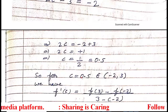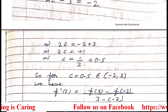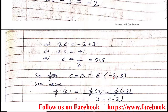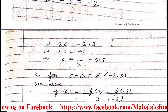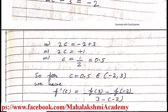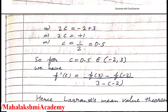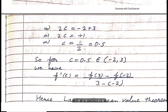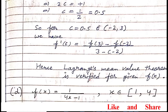Now we examine whether c = 0.5 belongs to the open interval (-2, 3). Of course, 0.5 belongs between -2 and 3. That's why, for this value of c, f'(c) satisfies the relation [f(3) - f(-2)] / (3 - (-2)). Therefore, Lagrange's mean value theorem is verified for the given function.